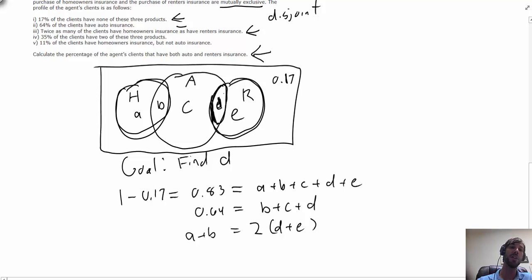Finally, well not finally, second to finally, 35 percent of the clients have two of these products. So what does that mean? Well there's two possibilities: either they have auto and renters, or they have auto and home, so this condition tells me that D plus B should be 0.35.